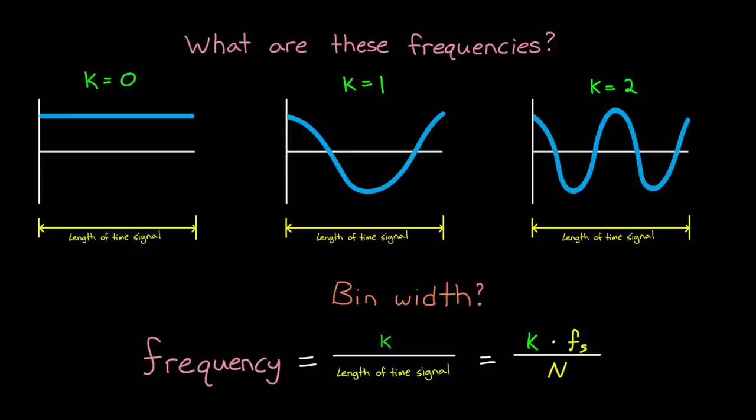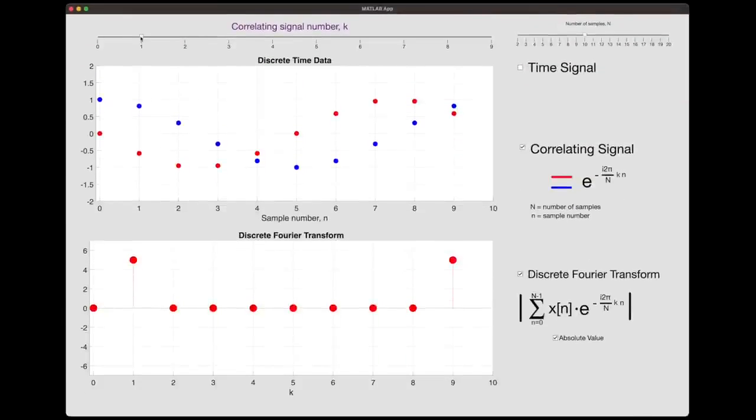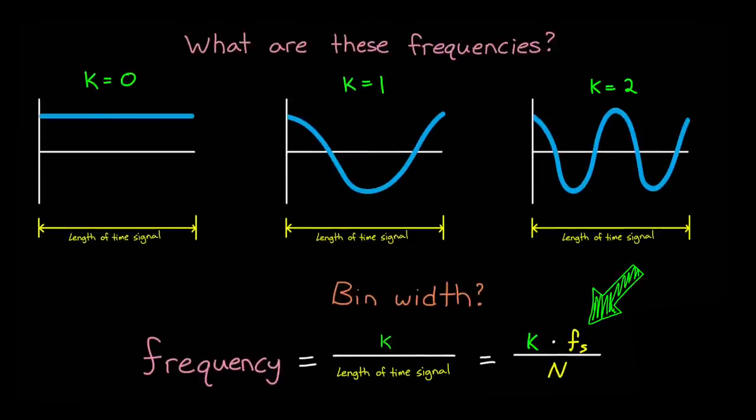Now you might also hear the term bin width, and this is the width of each frequency bin in the FFT. So if we go back to the spectrum that we calculated here, bin width is just the width in frequency between each of these samples. So how far is it between sample zero and sample one, and then from sample one to sample two, and so on. And we already know this answer. We just set k equals to one in this equation, and we get the width between two samples.